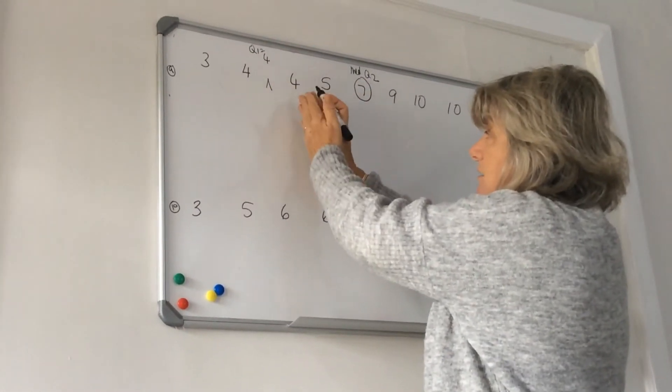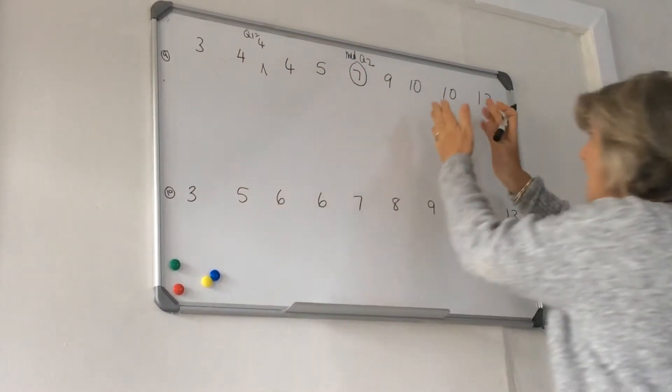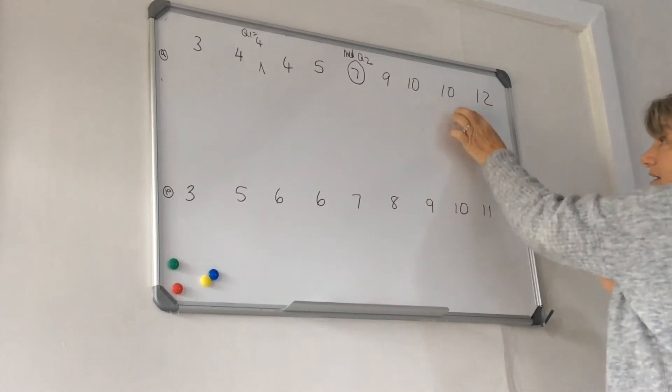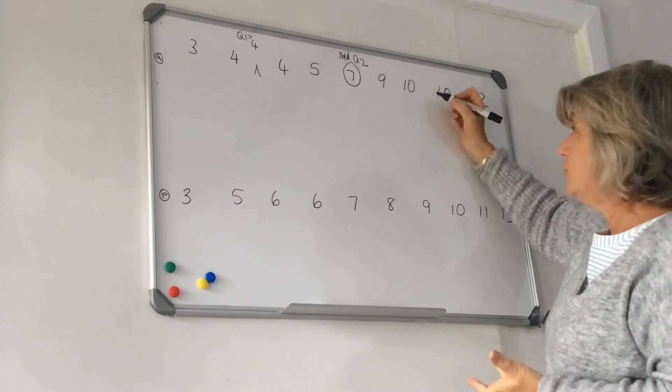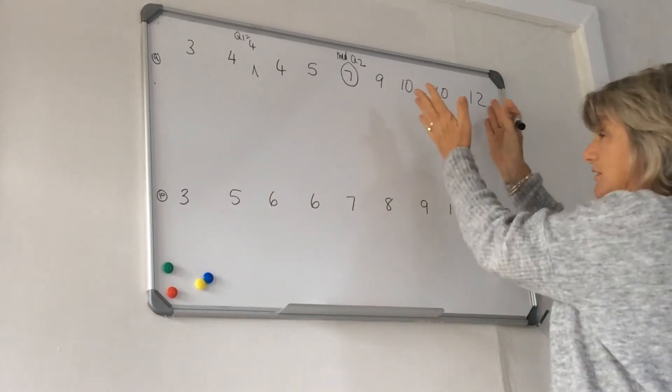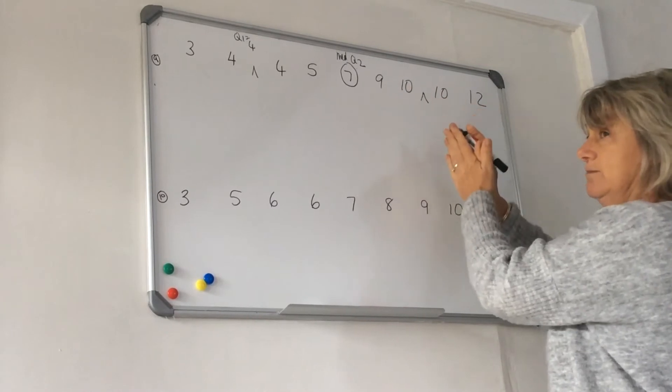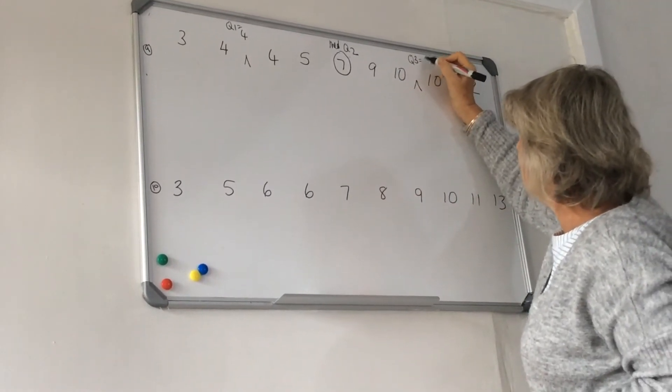Four plus four is eight. Eight divided by two is four. And it just so happens in this particular data set that there are two tens here, but again, neither of them is actually my quartile three. I would go through the process of going ten plus ten is twenty. Twenty divided by two is ten. So my quartile three is equal to ten.